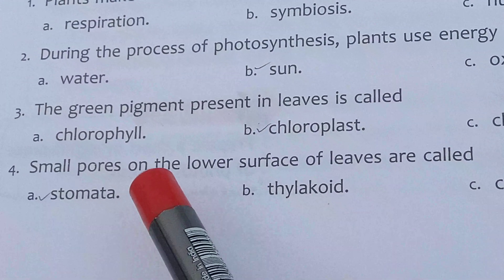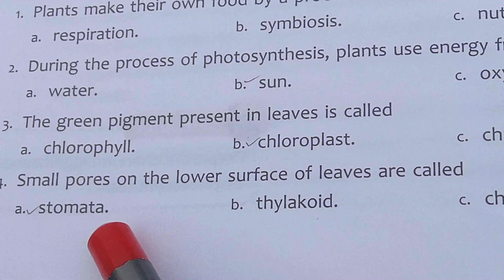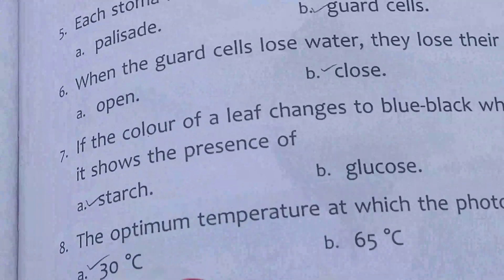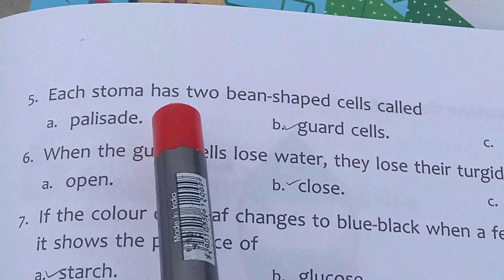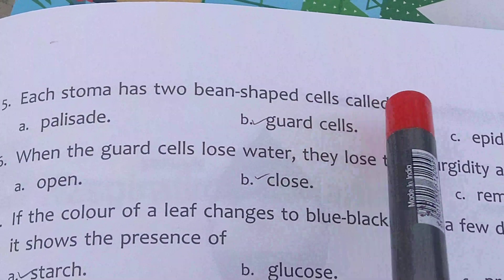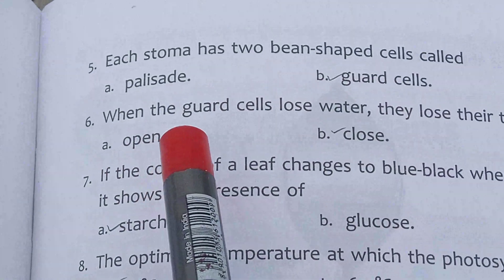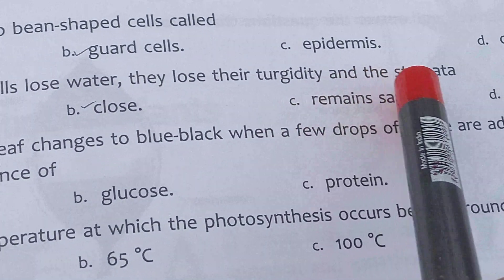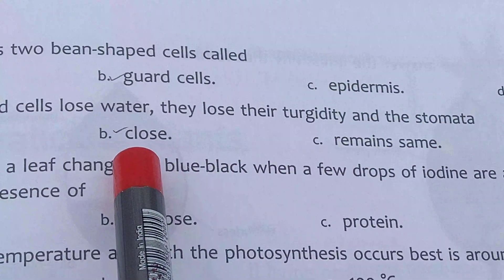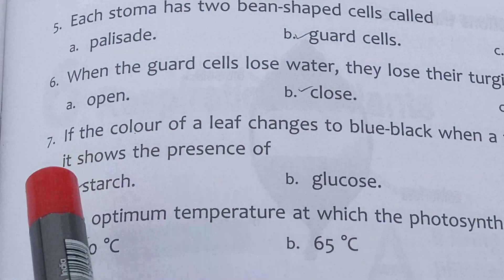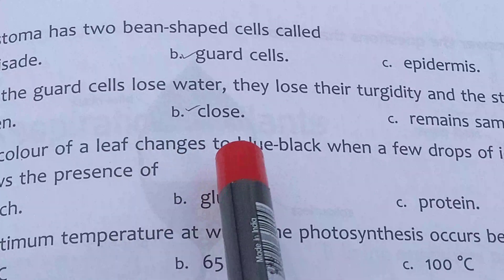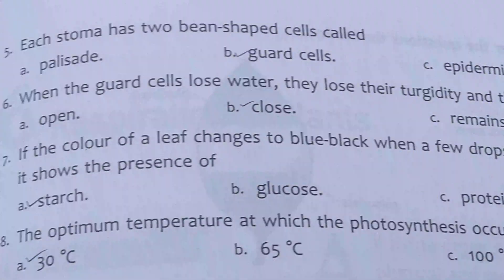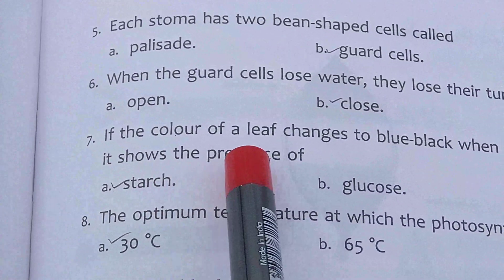Small pores on the lower surface of leaves are called stomata. Each stoma has two bean-shaped cells called guard cells. When the guard cells lose water, they lose their turgidity and the stomata close. If the color of a leaf changes to blue-black when a few drops of iodine are added to it, then it shows the presence of starch.